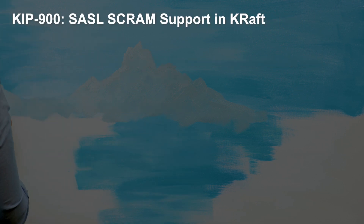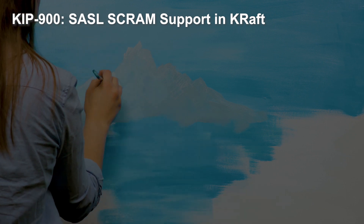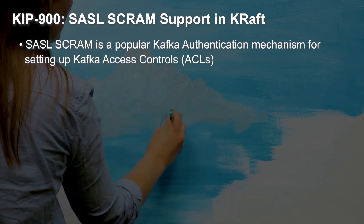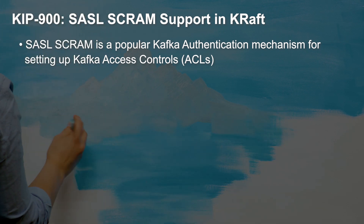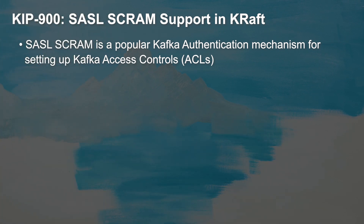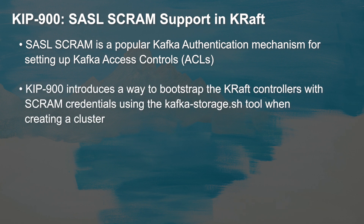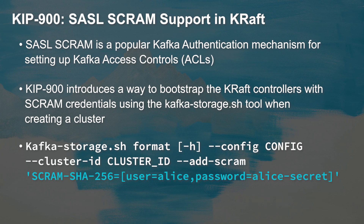KIP 900 brings support for SASL SCRAM to KRaft mode clusters. SASL SCRAM is a popular authentication mechanism for setting up access control lists, or ACLs, within Kafka. These ACLs are pretty important as they ensure that the brokers in the cluster have the right credentials to interact with each other as well as the controller. In ZooKeeper mode Kafka clusters, this Kafka metadata was added to and maintained by the ZooKeeper cluster itself. KIP 900 adds the ability to bootstrap your KRaft controllers with your SCRAM ACLs during cluster creation with the kafka-storage.sh script on the command line using the addScram parameter.